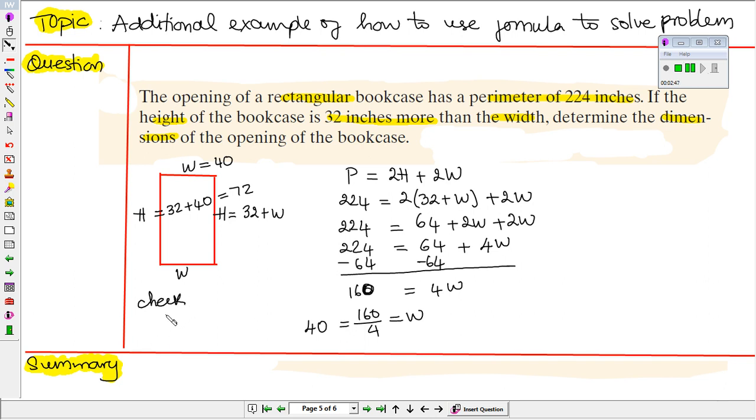We want to check that it is 224 equals 2 times the height, which is 72, plus 2 times 40. We put a question mark because we want to check to make sure it is 224.